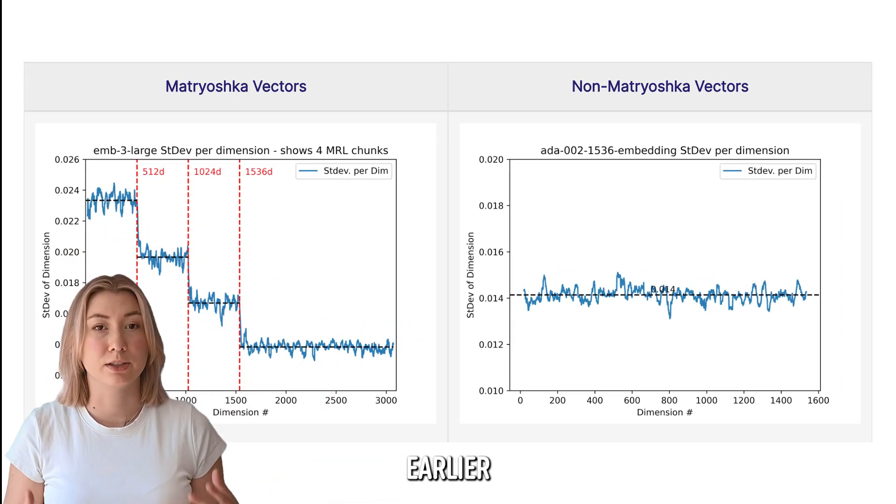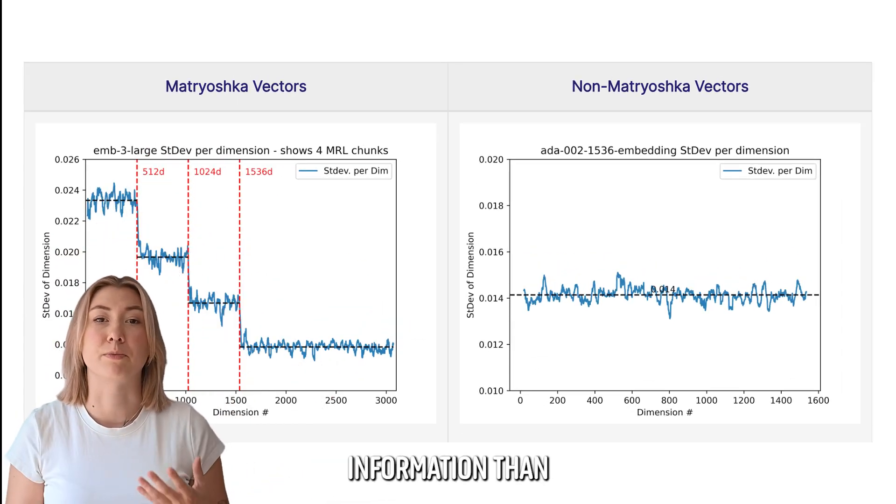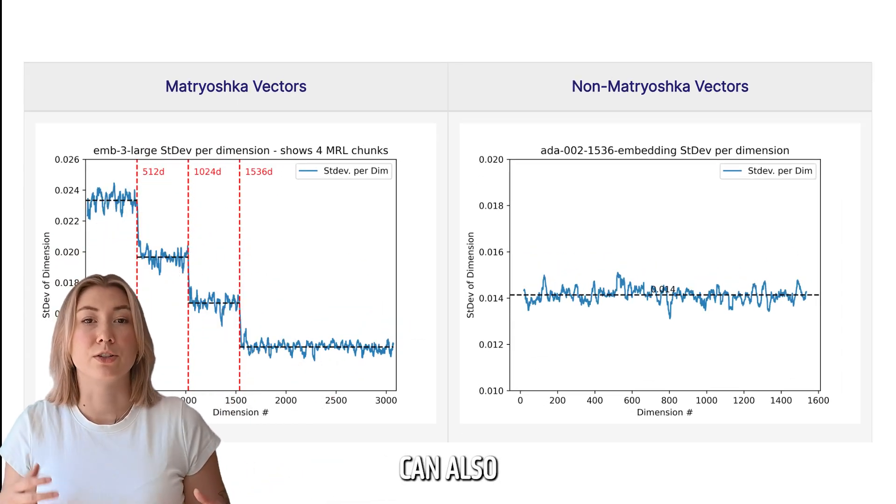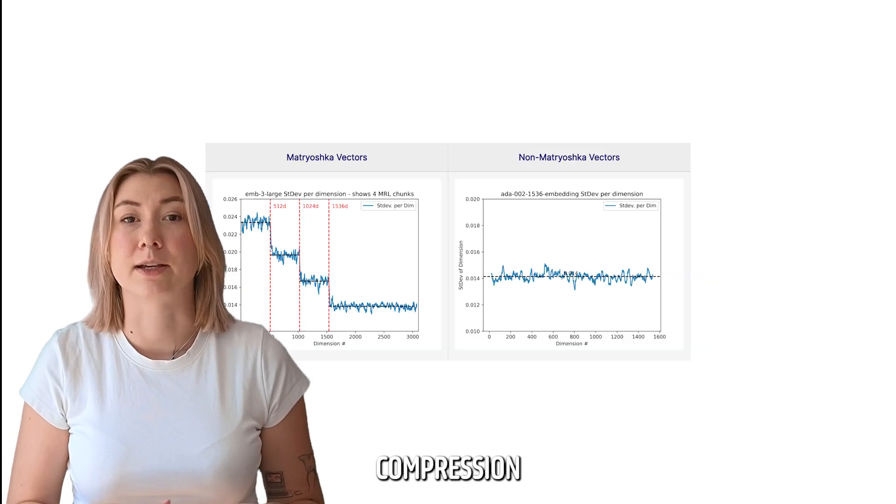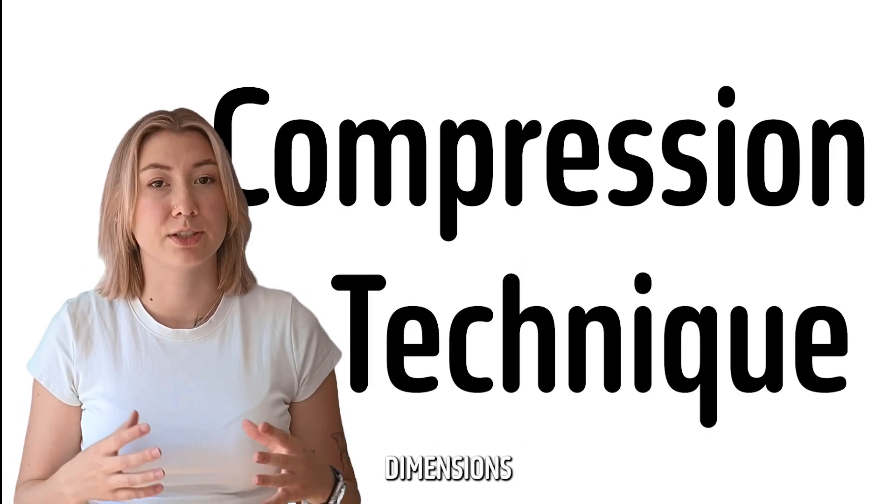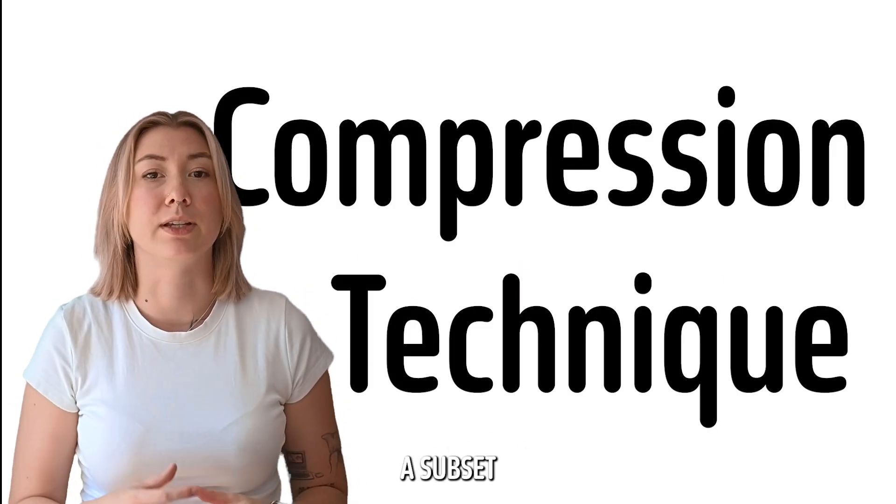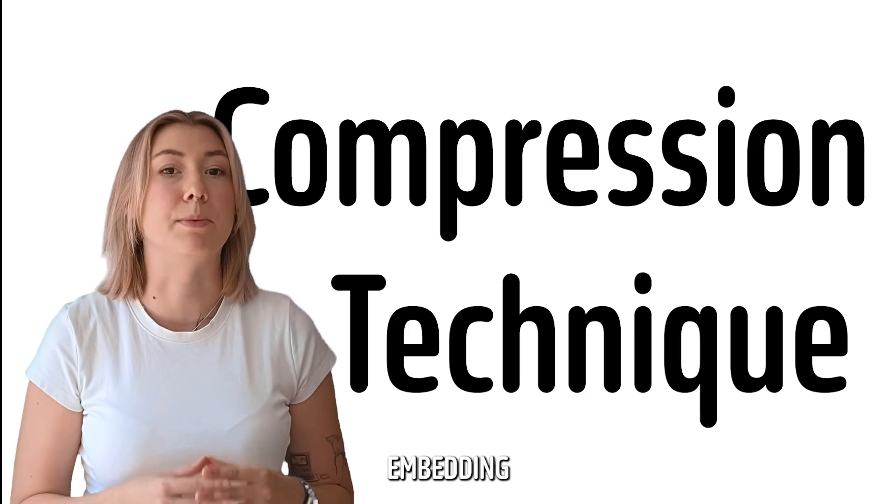If we apply MRL to vector embedding tasks, because earlier dimensions end up storing more of the information than the later dimensions, we can also use matrioshka embeddings as a compression technique by removing dimensions from the end of the sequence and only using a subset of the dimensions of the embedding vector.